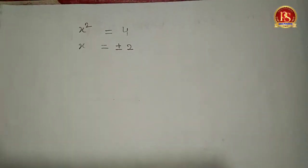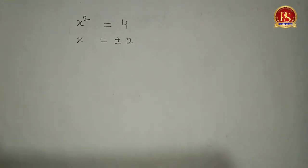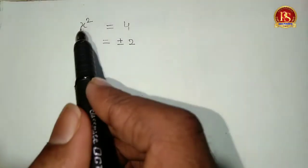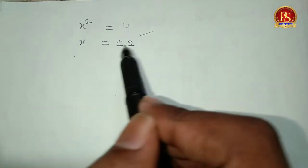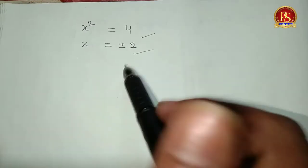Namaste. So before we begin, let me explain this problem. We have x² = 4, and when we solve for x, we get x = ±2. Now the question is, why do we get both plus and minus 2?